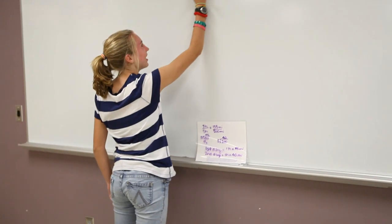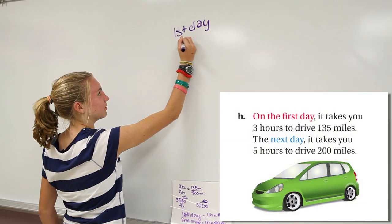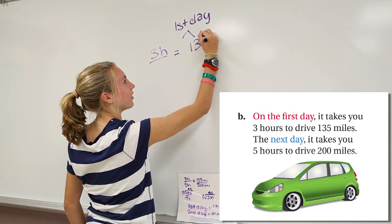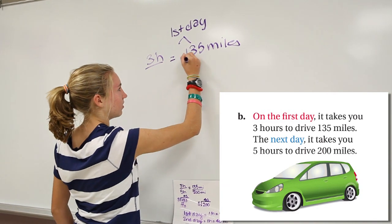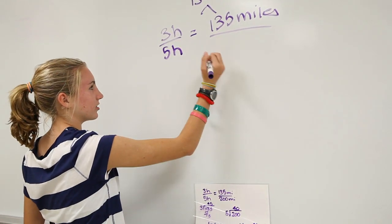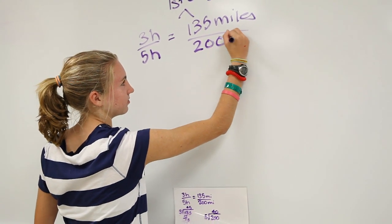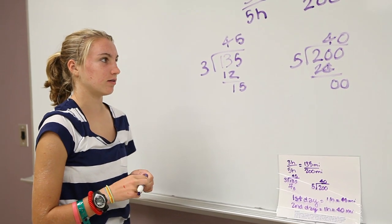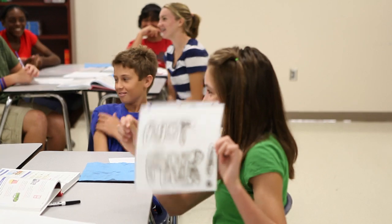As I was walking around I saw a lot of you doing some really great things. Can someone from the group that did problem B go up to the board and explain the proportion they came up with? On the first day the family drove three hours and had 135 miles. On the second day the family drove five hours and had 200 miles. For every hour they drove 45 miles on day one and 40 miles on day two. So is that situation fair or not fair?